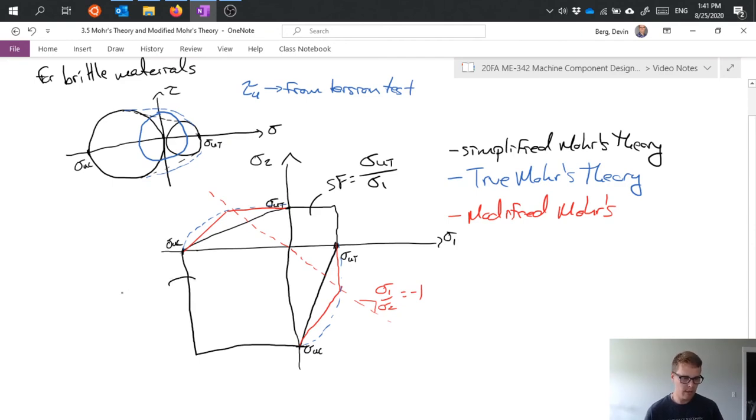in quadrant three same general idea. Safety factor equals sigma_uc over sigma_2. So same general principle if sigma_2 exceeds that compressive strength then we would predict failure